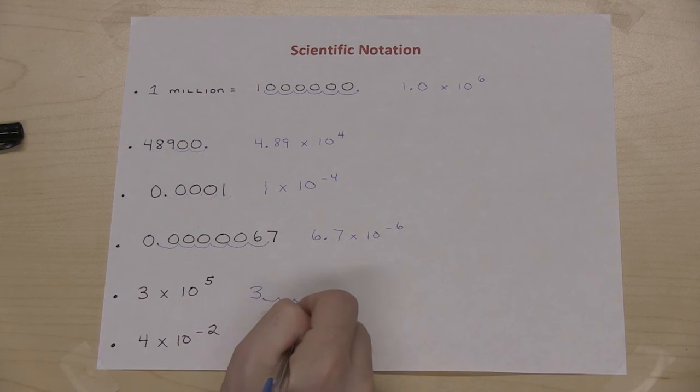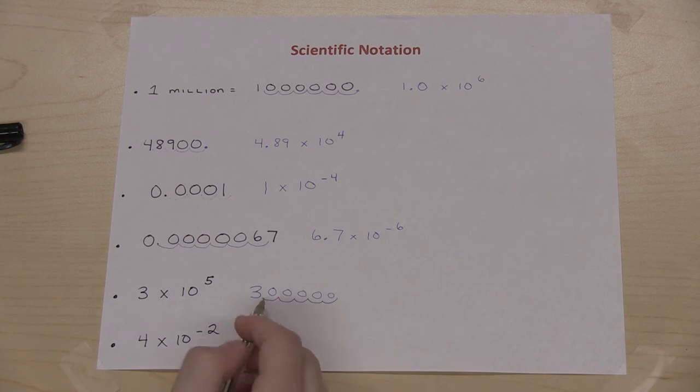1, 2, 3, 4, 5, and then I fill in with my zeros, 1, 2, 3, 4, 5. So 3 times 10 to the fifth is the same as 300,000.